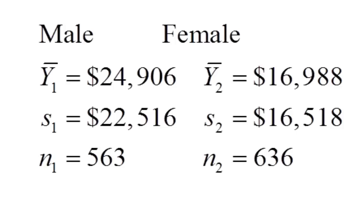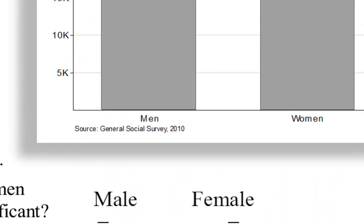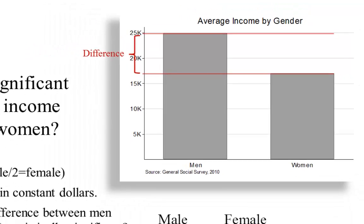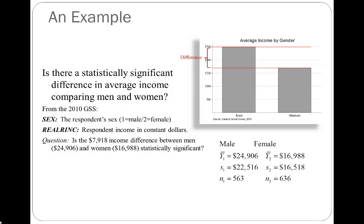Are we prepared to conclude that there's a statistically significant difference in average income for men and women? That difference — approximately $8,000 highlighted by red lines on the bar chart — is what we'd like to make a decision about using hypothesis testing. Either that difference is due to sampling error or chance, or it's large enough that we'll conclude there's a statistically significant difference.